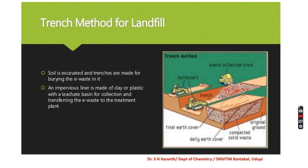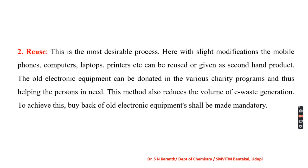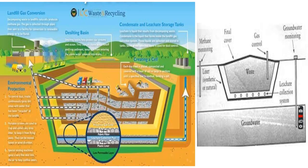The landfill is provided with an impervious liner made of plastic or clay to prevent leaking. A leachate collection basin collects and transfers the leachate to a wastewater treatment plant. As can be observed in the diagram, the liner is used at the base and the leachate is directed into a leachate storage tank before treatment.